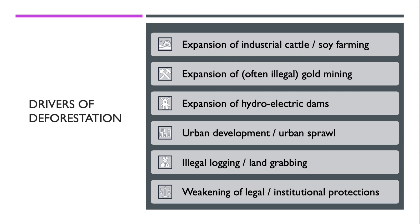Land grabbing is in part caused by the absence of property rights. There's a hazy line between who owns the land, and that can often result in local people and indigenous groups effectively being forced off their land and becoming impoverished. Fundamentally, this major problem is the result of the weakening and softening of legal and institutional protections. Property rights have not been enforced properly.